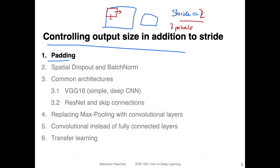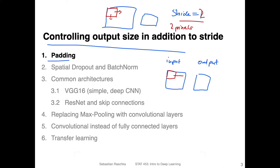Padding is kind of the opposite of that — it allows us to make the output larger. So if we have an input image and an output, we have our kernel sliding over the input. What we do now is add a border around the image. A padding of one means one row of pixels added on each side. You can also control this more finely: one for the top, one for the right, one for the bottom, and one for the left.